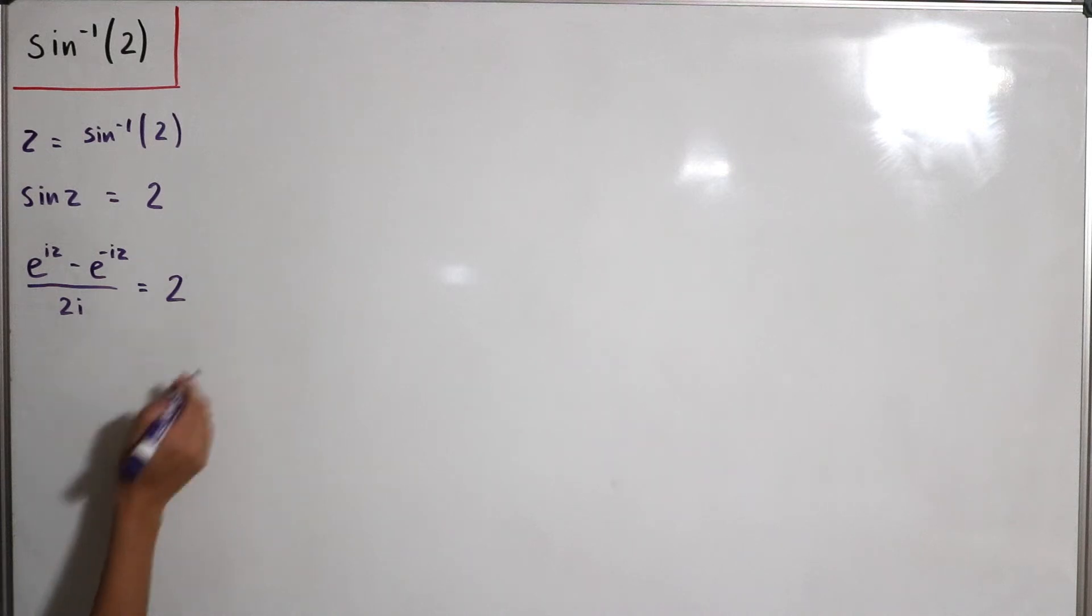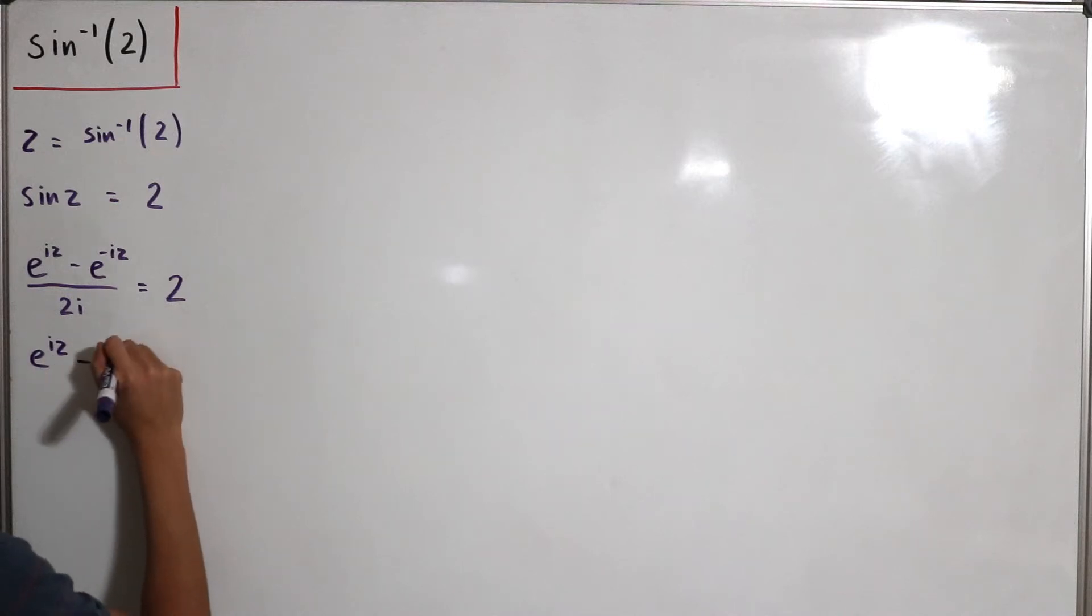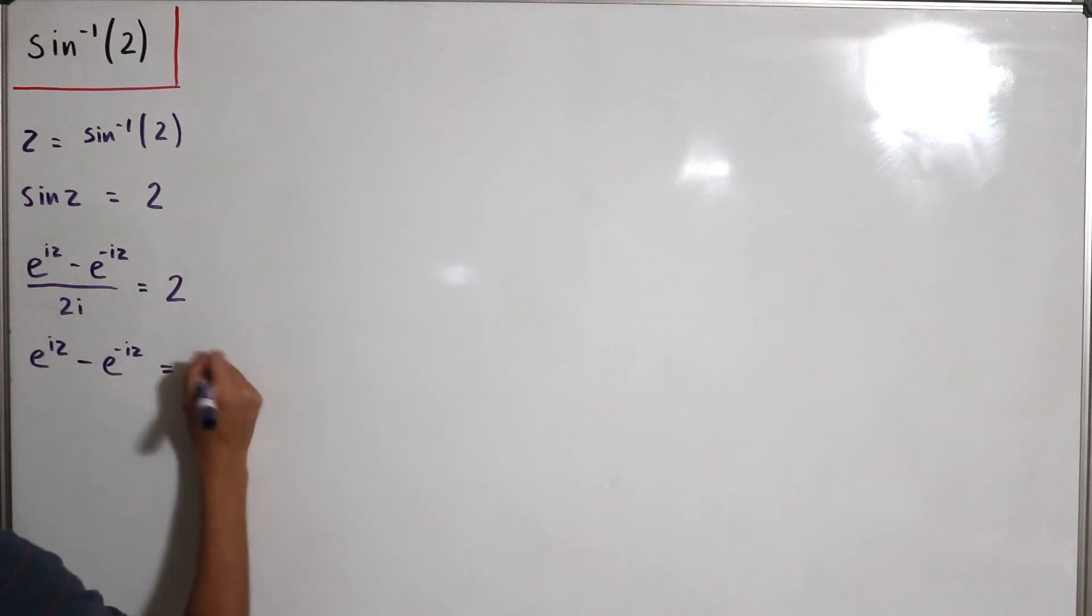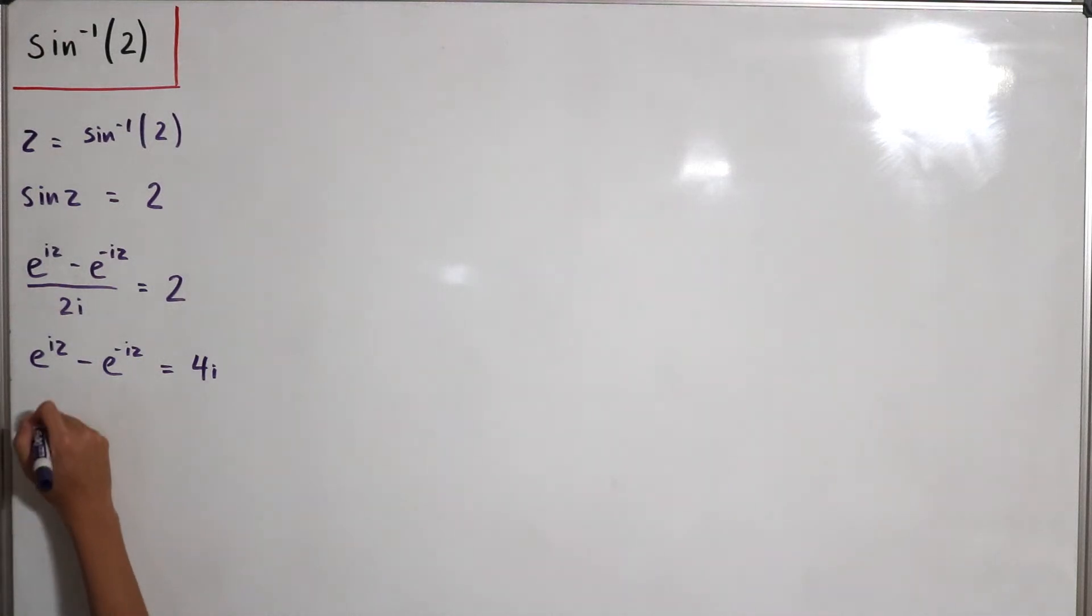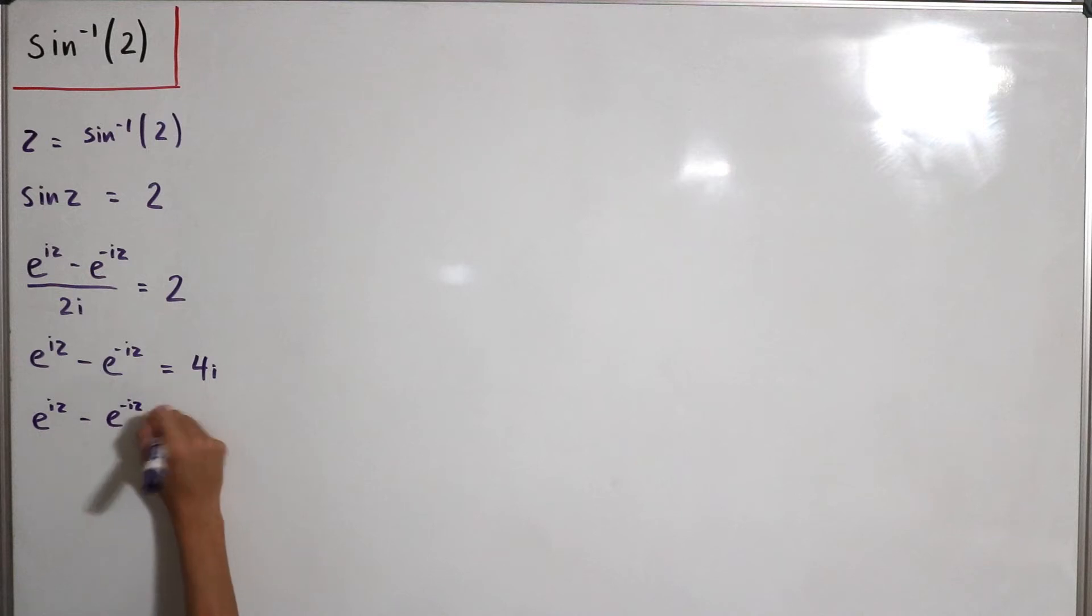So I could just multiply the 2i to both sides so we have e to the power iz subtract e to the negative iz equals 4i. Then I can just subtract that and we actually get a quadratic equation. Let's see, minus 4i equals 0.